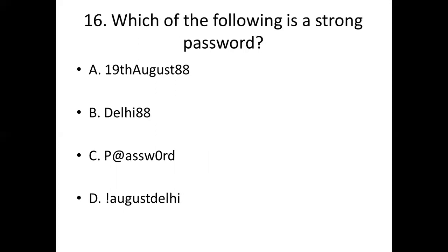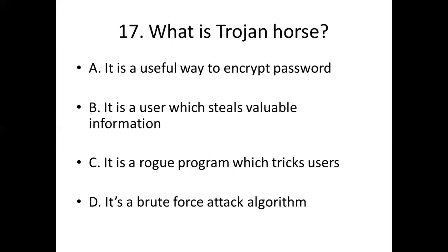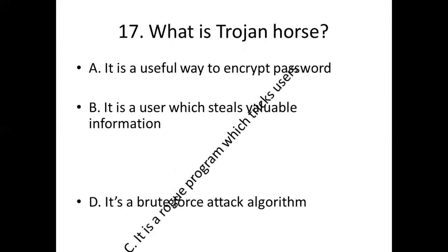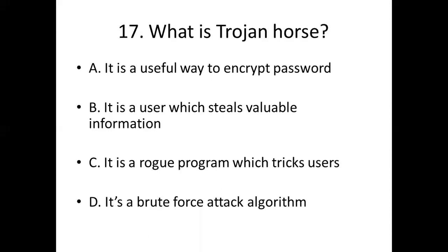Sixteenth bit: Which of the following is the strongest password? Answer: Option C. Seventeenth bit: What is a Trojan horse? Option A: It is a useful way to encrypt password. Option B: It is a user with stolen valuable information. Option C: It is a rogue program which tricks the user. Option D: It is a brute force attack algorithm. Answer: Option C — It is a rogue program which tricks the user.